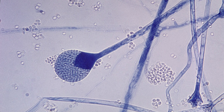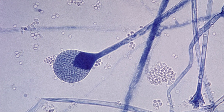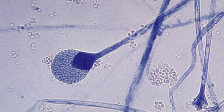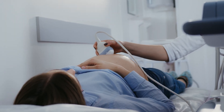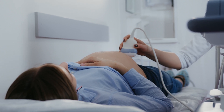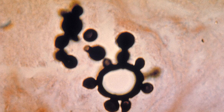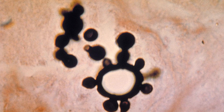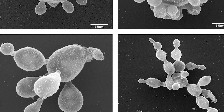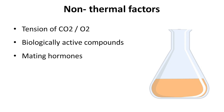In Mucor species, yeast growth occurs under anaerobic conditions, while hyphal growth is observed when oxygen is present, such as in tissue environments. One of the main hormones of the female reproductive system, estradiol, binds to the cell's surface receptors inhibiting the phase transition of Paracoccidioides brasiliensis at 37 degrees Celsius.